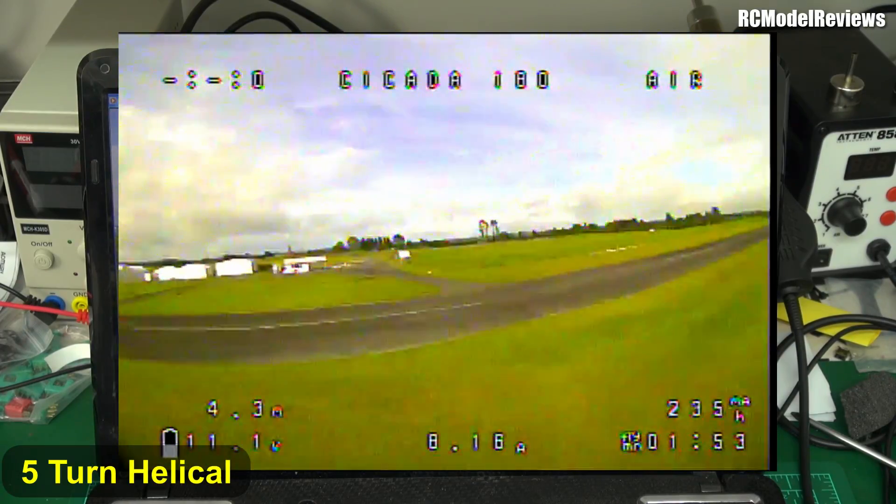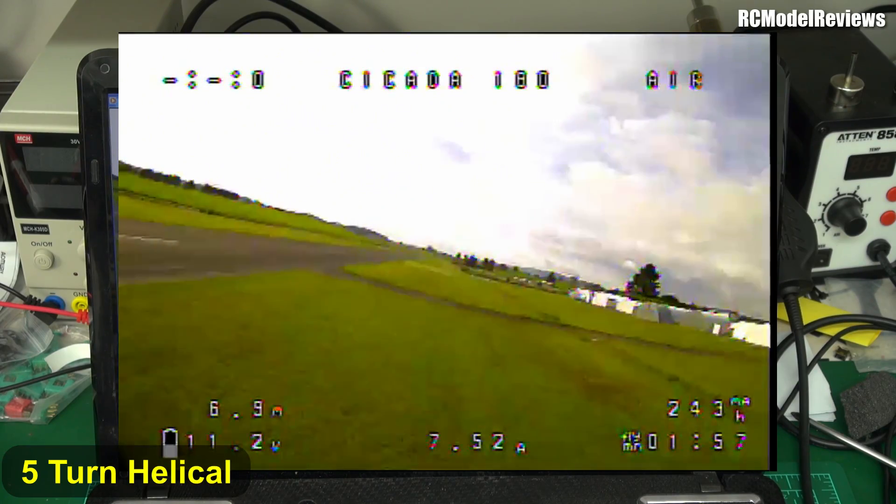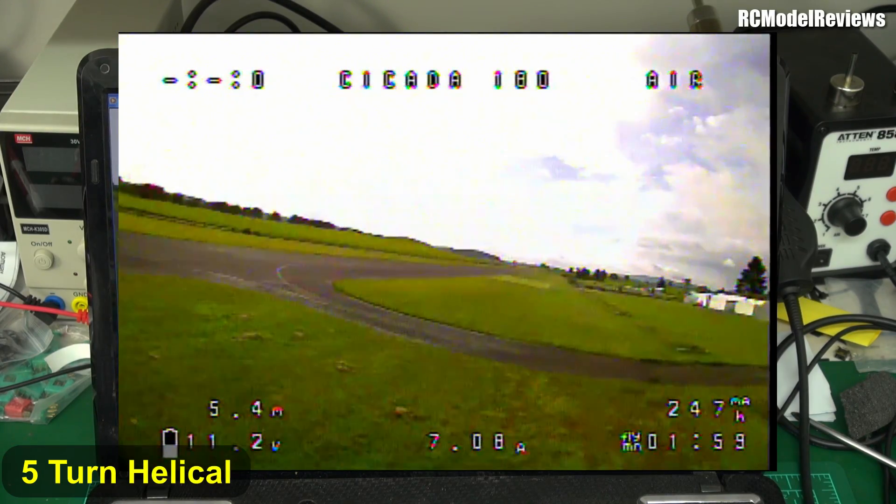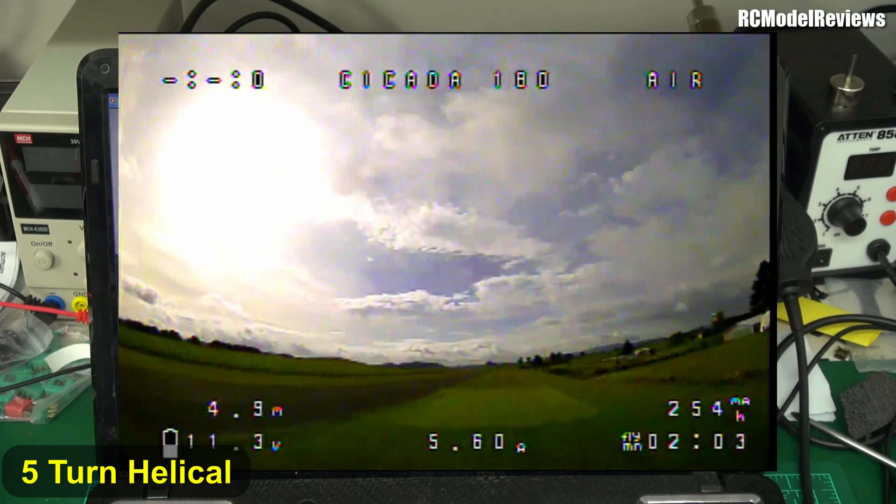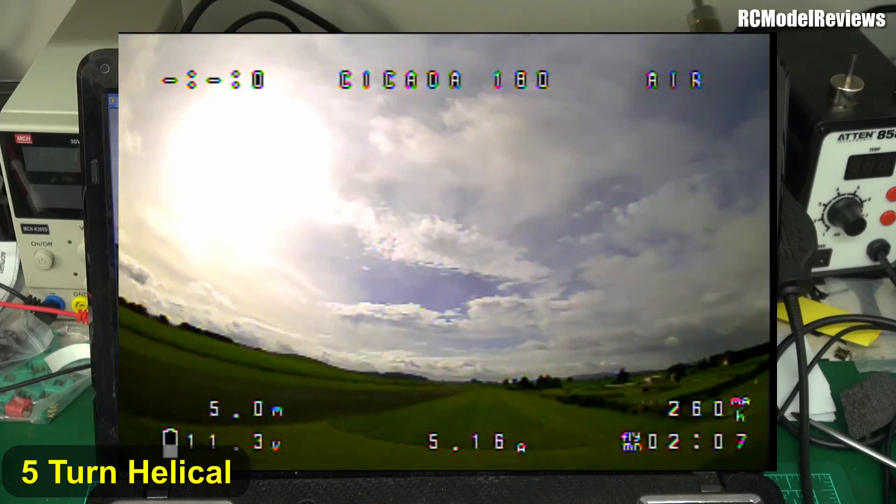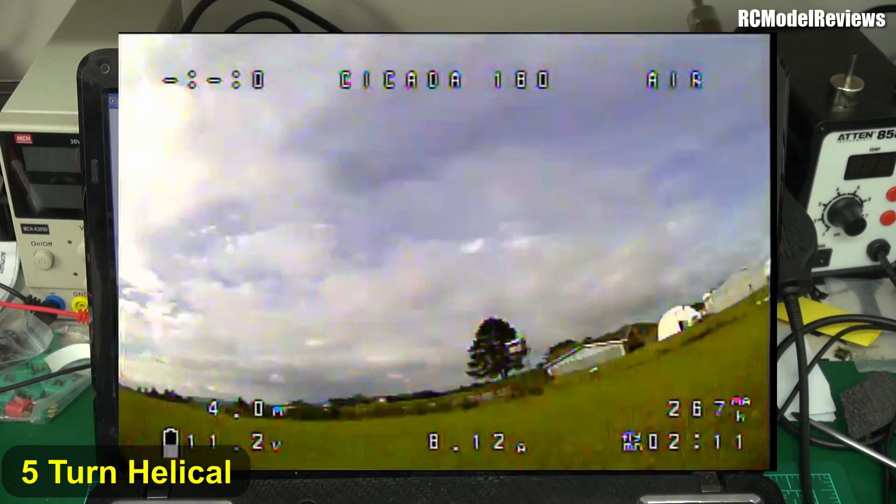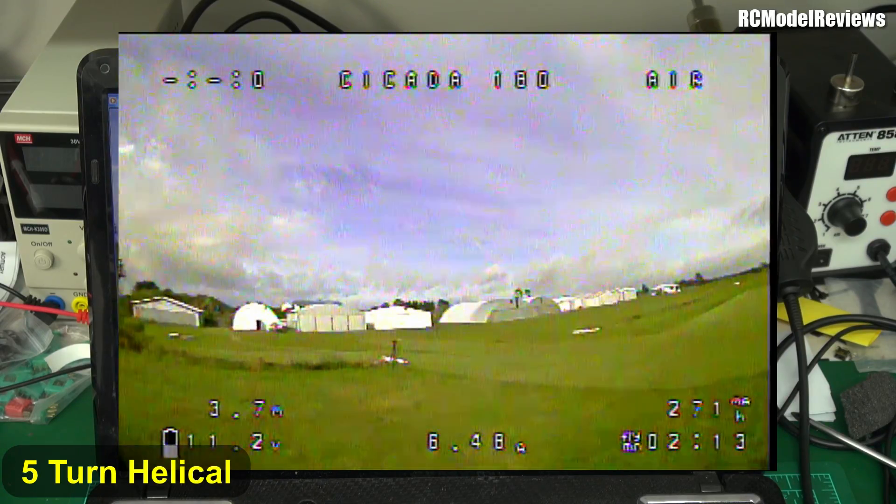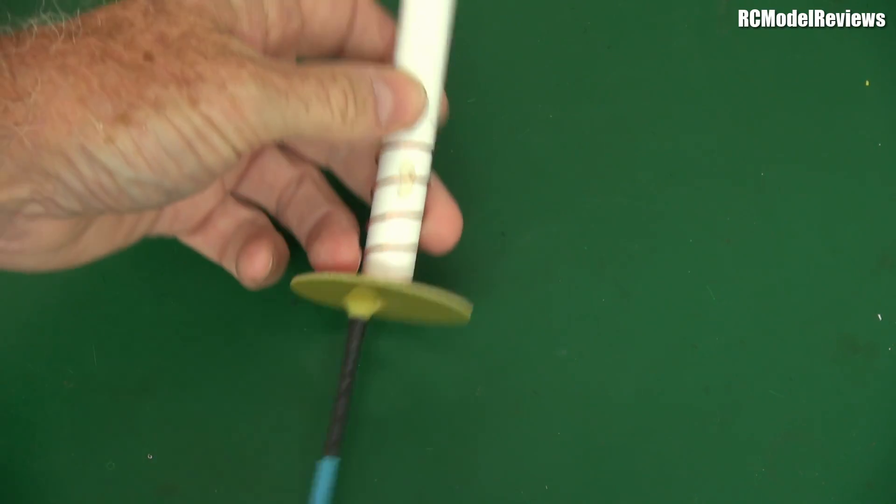There we go, we're back in the beam. That's much better than the seven so it's got a much wider beam than the seven turn. That's probably why five turn helicals are the most popular if you're going to use them on your goggles. They do have a wider beam than the seven, they're not as much gain but you don't have to be so accurate with your head positioning. Coming in to land, perfect landing of course as I always do. Now we will try out the three turn.